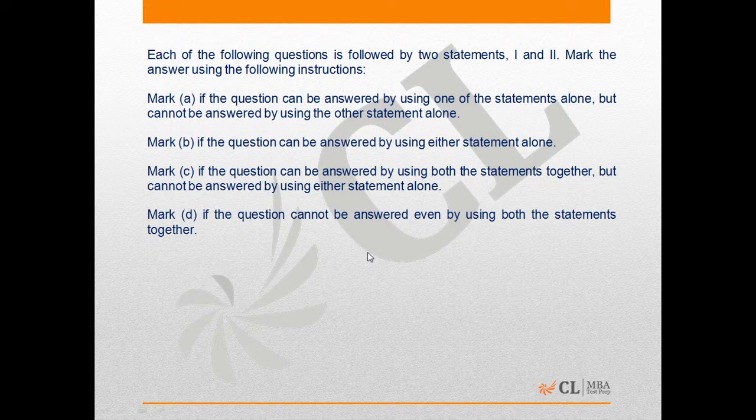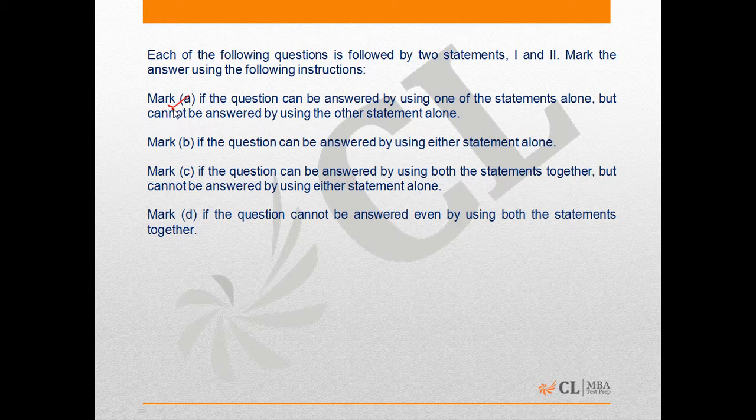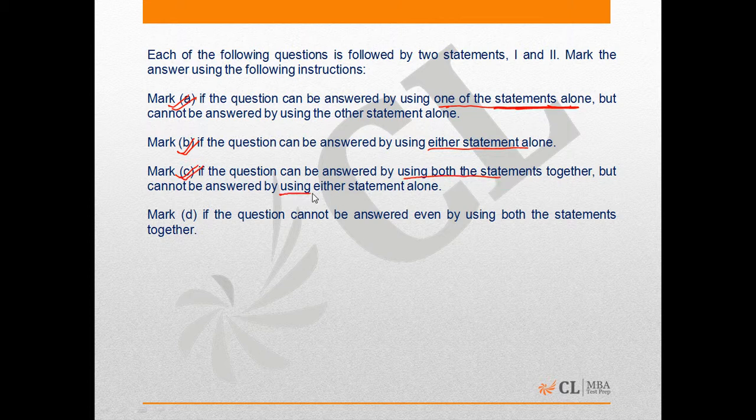It's a DS question. Let us review the conditions first. I mark option A if the question can be answered by only one of the statements alone, any one. I mark option B if it can be answered by either statement alone. I mark option C if it can be answered by both but not individually by any of them, and mark option D if it cannot be answered by any of the statements.